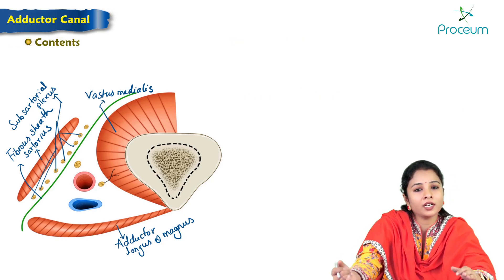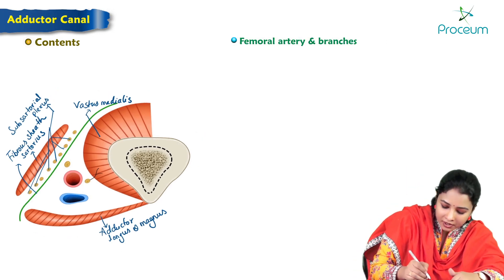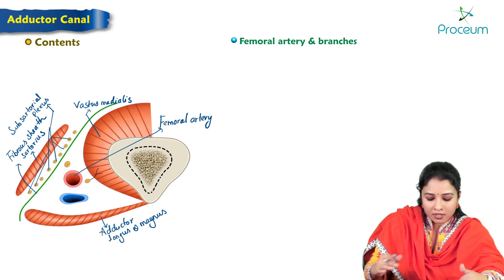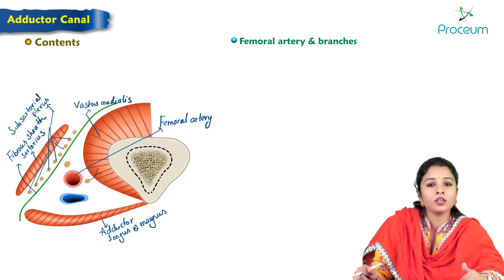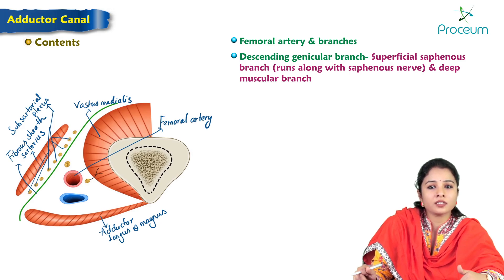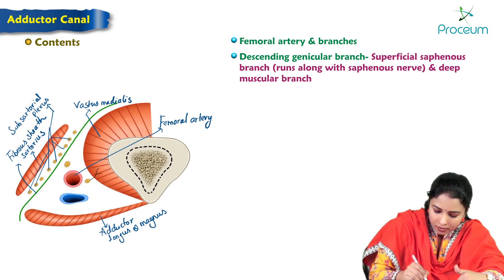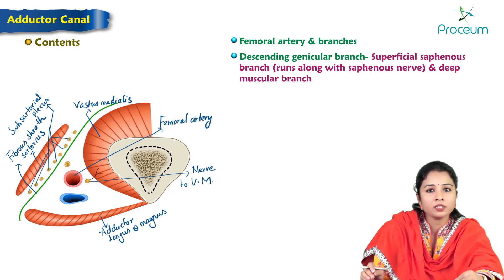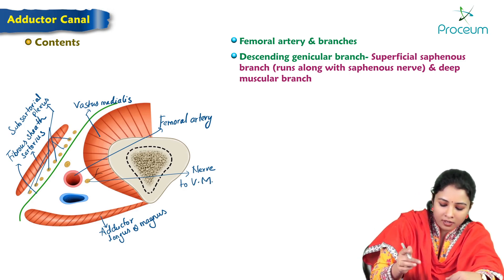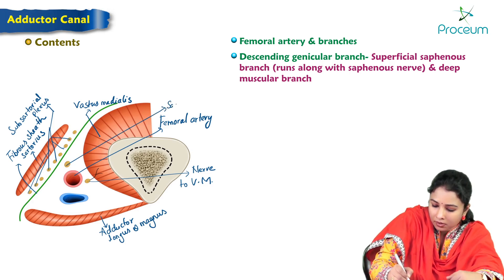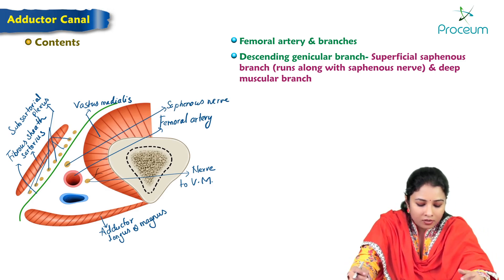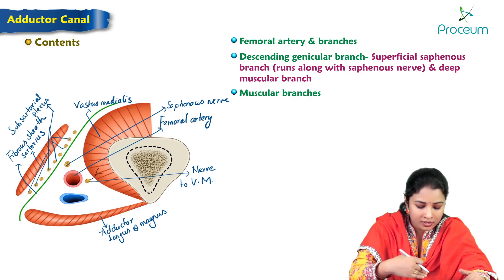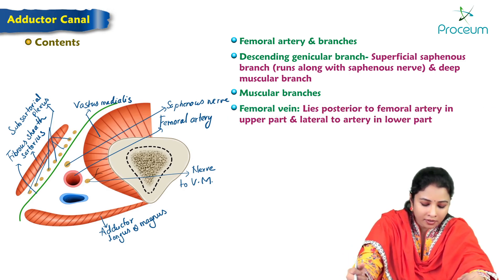The contents of the adductor canal include the femoral artery, which is the chief content, along with its branches. Branches include the descending genicular branch and the superficial saphenous branch, which runs along the saphenous nerve. There are also muscular branches given to the vastus medialis. The femoral vein lies alongside the artery.